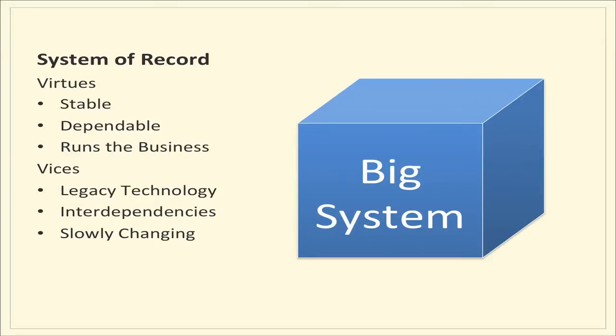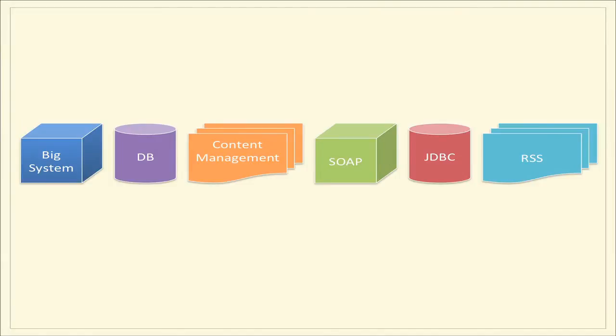The problem with these systems of record is that they're often based on legacy technologies that aren't easy to expose to web standards like HTTP. There are many interdependencies — you want to expose a core system through an API but you're not sure what impact it will have on all the non-linear dependencies that system relies upon. And thirdly, they're slowly changing — by virtue of being stable and dependable they can't move as quickly as the changing needs of an iPad or iPhone developer. And it actually gets worse because we're often talking not about one big system but an array of complementary systems needed to make an API useful.